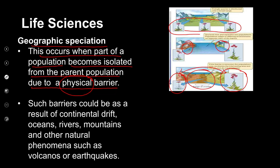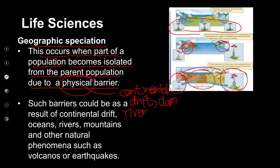The physical barrier separates the two parts of the population. It can be due to continental drift — so there's an ocean between them — any kind of water body, a lake, a dam, or humans could have built a dam, or there could have been an earthquake or other natural phenomenon. In fact, there can even be man-made barriers too.